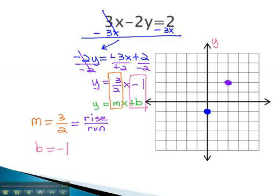By connecting the dots, we will end up with the graph of our line. This is the line that is represented by the equation 3x minus 2y equals 2.